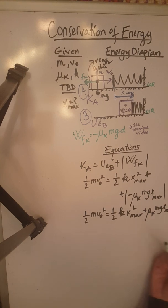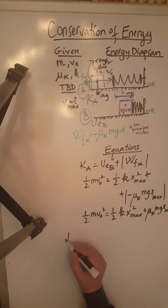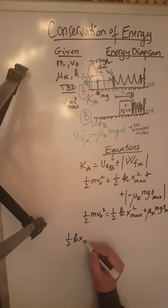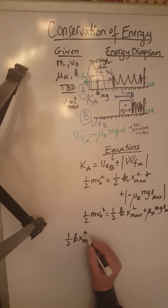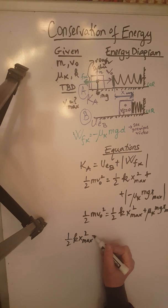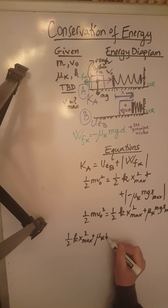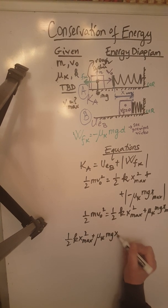So let's rearrange it in such a way that we have our quadratic equation, formula A x squared plus B x plus C equals zero, which means the first term is going to be this one, 1 half K x max squared. The second one will be this one, mu K M G x max.